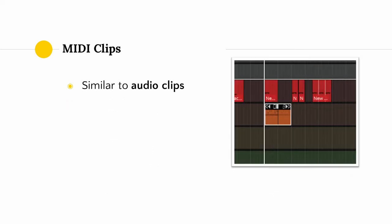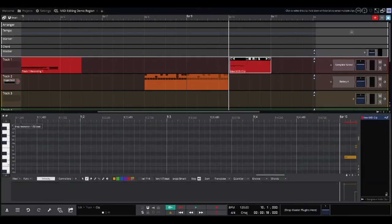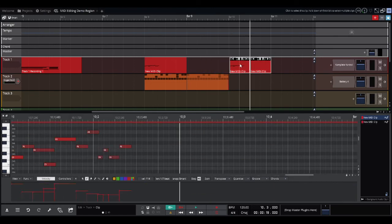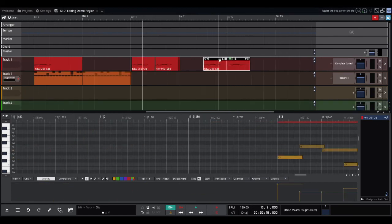Both the piano roll and the step sequencer allow for note-level manipulation — they allow you control over individual notes. However, most DAWs will also allow you to organize MIDI into clips, which you can manipulate similarly to audio clips discussed in the editing section. For instance, you can cut, copy, paste, split, and loop MIDI clips.